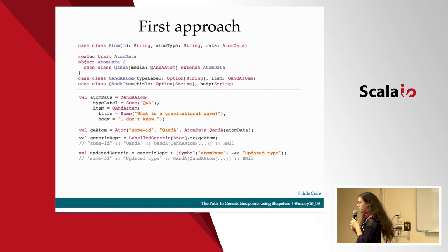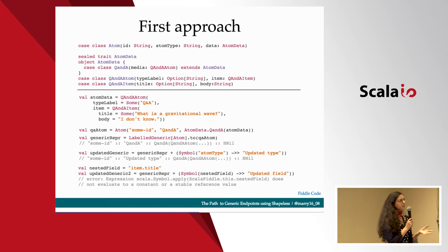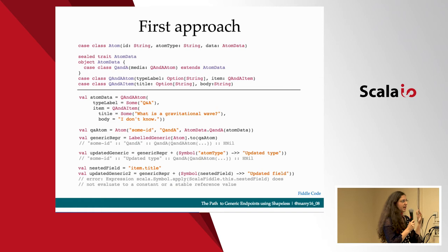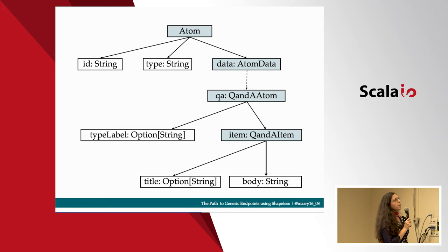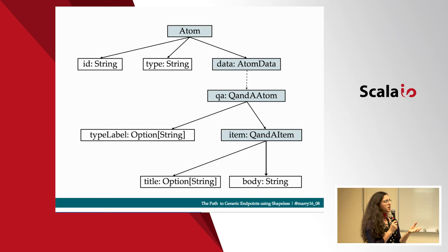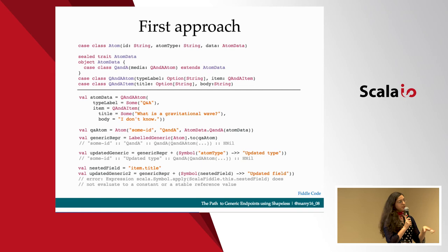But what happens if we want to update a field that's nested? We face two issues. One is that you cannot pass a variable to the symbol's constructor because the magic happens at compile time. And second, because the field is nested, we don't have enough information about our field at this point. When I created a generic representation from atom, only the first layer below atom has been converted to a generic representation — so we don't have one for atom data and we can't go deeper inside the tree. I'm going to share the slides if you want to play with this.